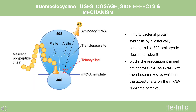Mechanism of Action: D-meclocycline inhibits cell growth by inhibiting translation. It binds reversibly to the 30S and 50S ribosomal subunits and prevents the aminoacyl-tRNA from binding to the A site of the ribosome, which impairs protein synthesis by bacteria.